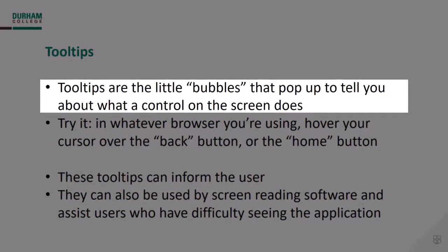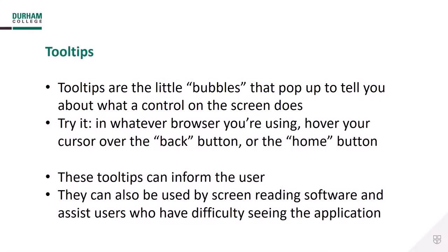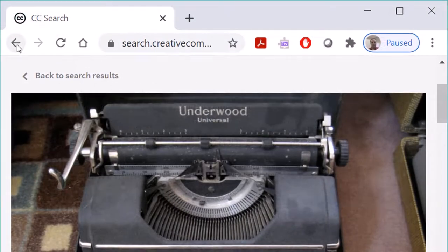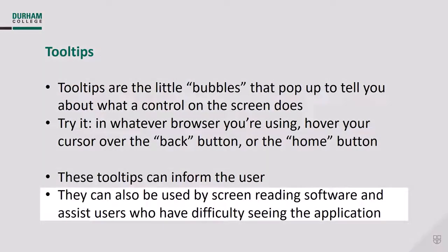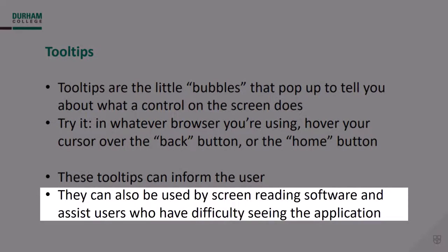Tooltips refer to the little assistance bubbles that pop up in an application, usually when you hover a pointing device over a control for a short time. They're common on Windows applications and sometimes used on the web — check them out in any mainstream web browser or Microsoft Word. Not only can these be generally helpful, but in many environments they're essential for people using assistive software like screen readers. The tooltips are often the only information that gets communicated to users who are using screen reader software, and we need to do what we can to make their experience easier.